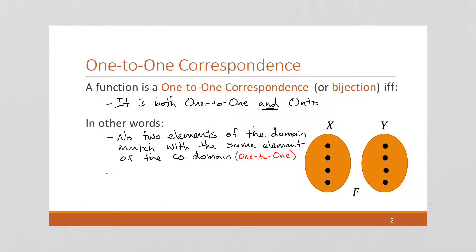And then, so no two elements of the domain match with the same element of the codomain. That means we can't have, in our arrow diagram, we can't have that situation. That's not allowed.